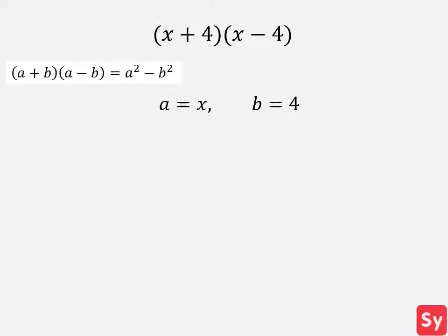We plug these values back into the identity and get that x plus 4 times x minus 4 equals x squared minus 4 squared. We simplify and get x squared minus 16, which is our answer.